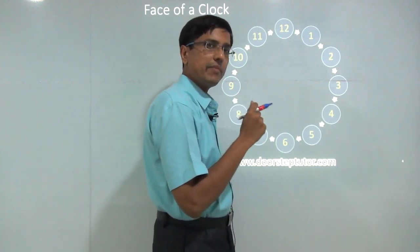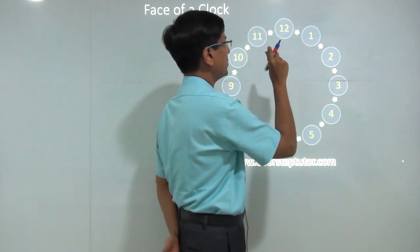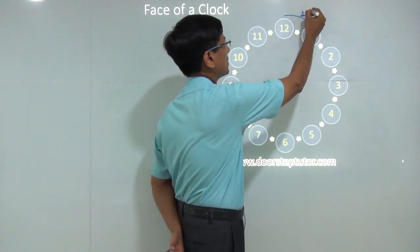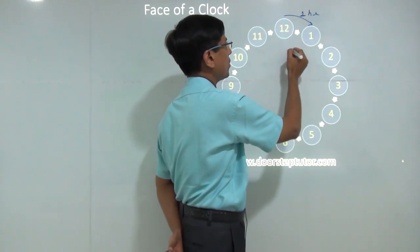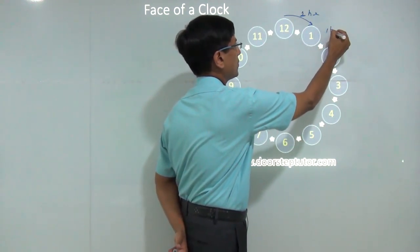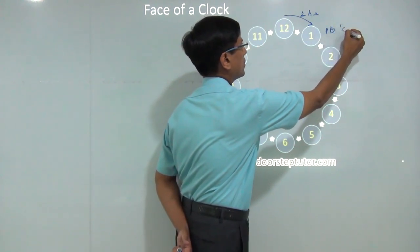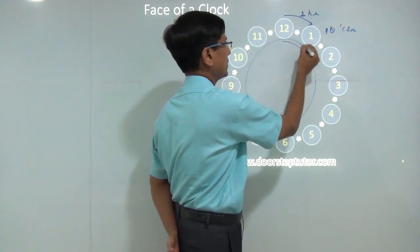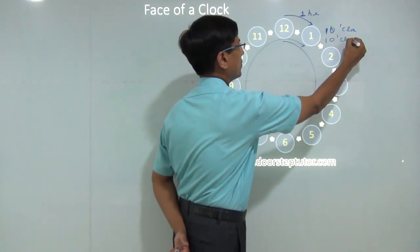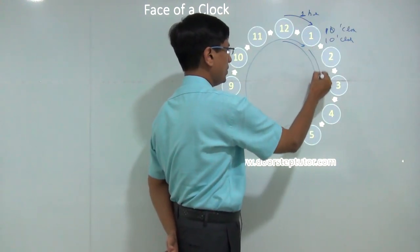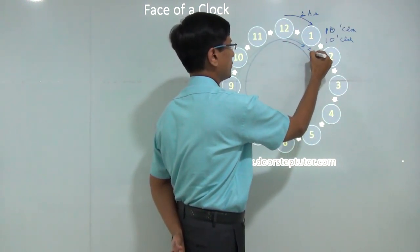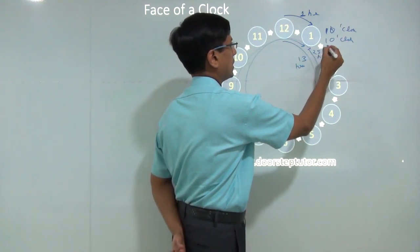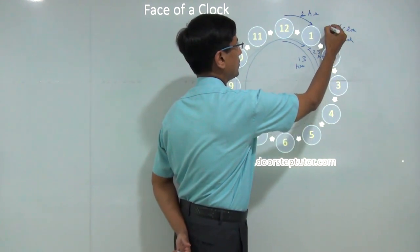To understand it better, let's take a simple example. If I go forward 1 hour from 12 o'clock, I come to 1 o'clock. If I go forward 13 hours, I again come back to 1 o'clock. If I go forward 25 hours, I again come back to 1 o'clock.